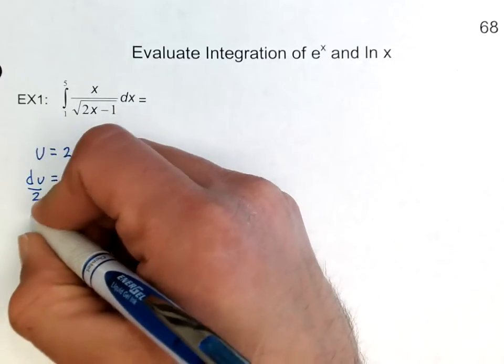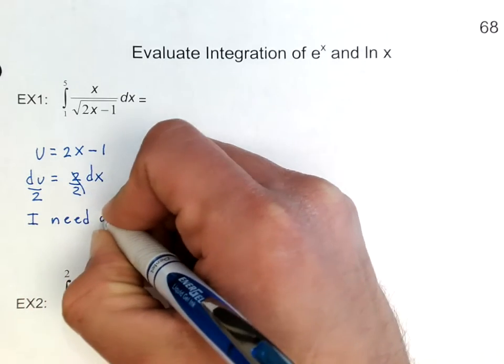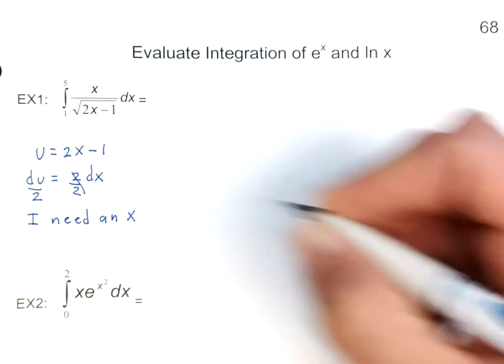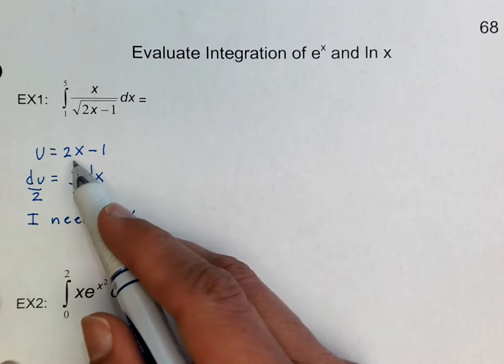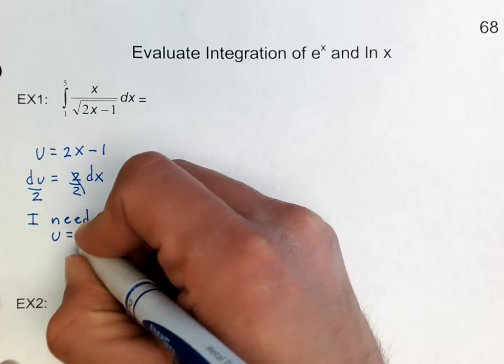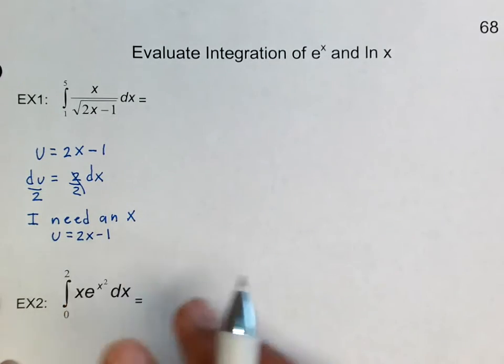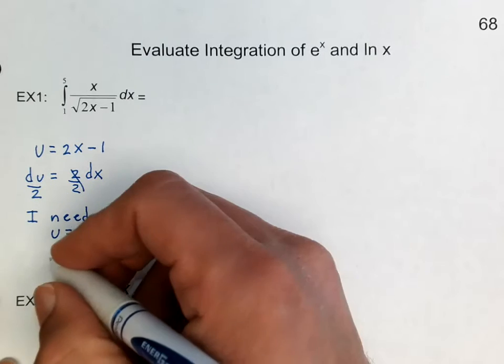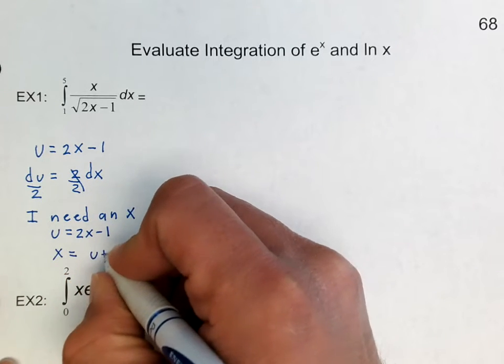So if you didn't get this the first three times, I need an x. If I need an x or an x squared or anything like that, x cubed, x to the fourth, I'm going to obtain that from using this original substitution. So if u is equal to 2x minus 1, I'm going to solve for x here. So if I solve for x, I'm going to get that x is equal to u plus 1 over 2.